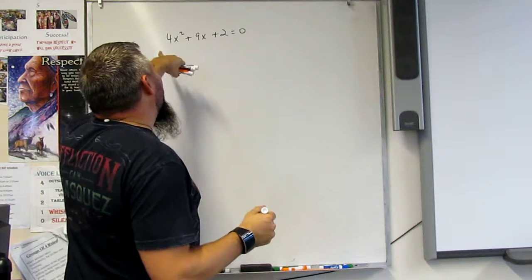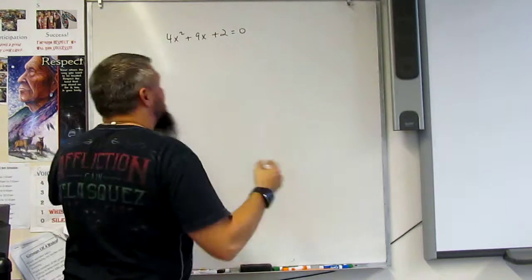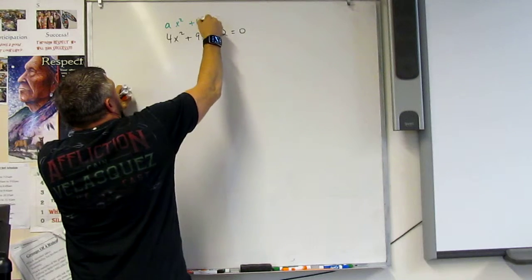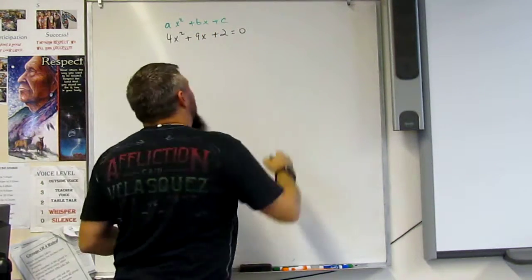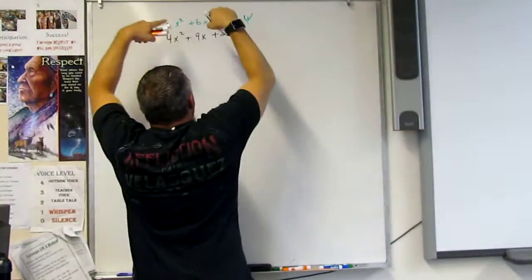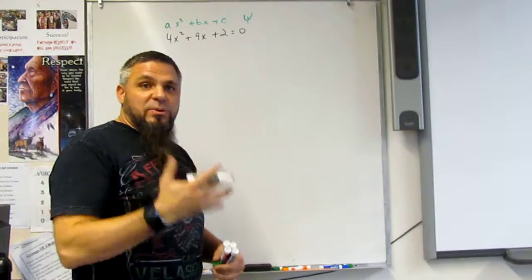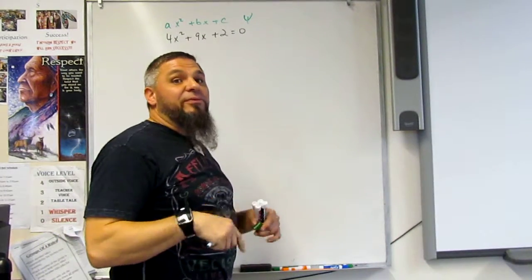All right, so 4x squared plus 9x plus 2. So we gotta remember we got ax squared plus bx plus c, right? And so that is what a quadratic formula is, or that's what a quadratic is, right? The square, but then we got to use the formula.